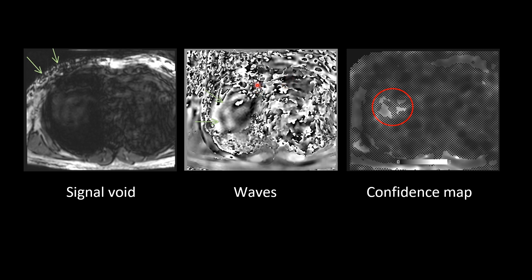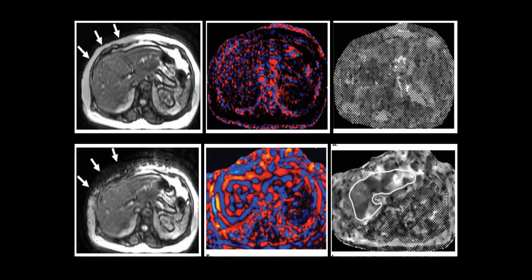Areas with significant artifact are covered by the 95% confidence map, and only the area where propagation of waves is proper is left by this map. In a non-diagnostic example, there is no signal void present, no clear waves on the wave images, and the entire image is covered by the confidence map. When done correctly, the signal void is visible, the waves propagate nicely through the liver in the phase images or color elastogram, and the liver parenchyma is left out by the confidence map.